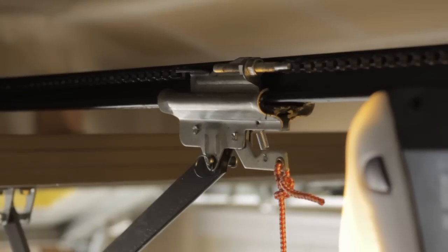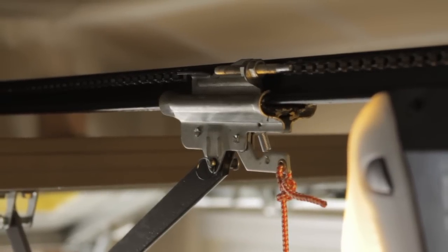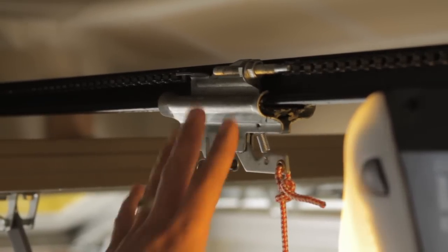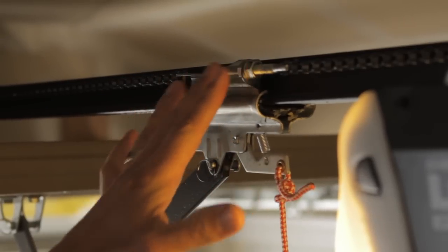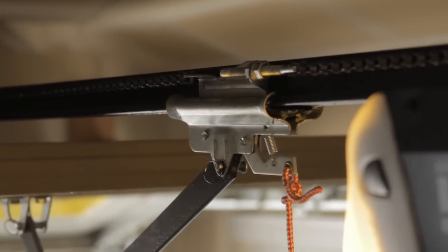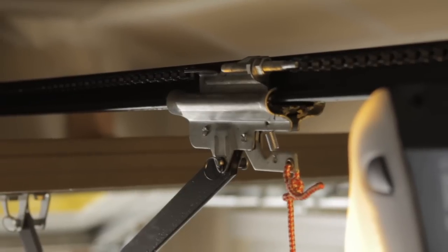So to adjust the chain tension on your operator, what you're going to use is this system right here of nuts. Basically what you're looking for is if your chain is hanging down real low, starting to drag on the door.